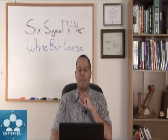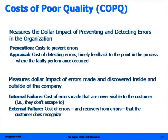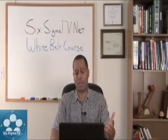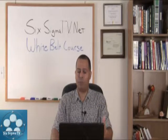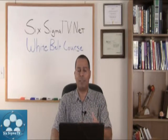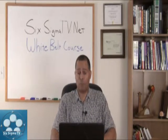You want to get some initial metrics. This is a white belt course, just giving you an understanding of what you're getting into if you proceed toward green belt, black belt, or master black belt certification. Initial metrics include: cost of poor quality, rolled throughput yield, process capability, and defects per million opportunities (DPMO).